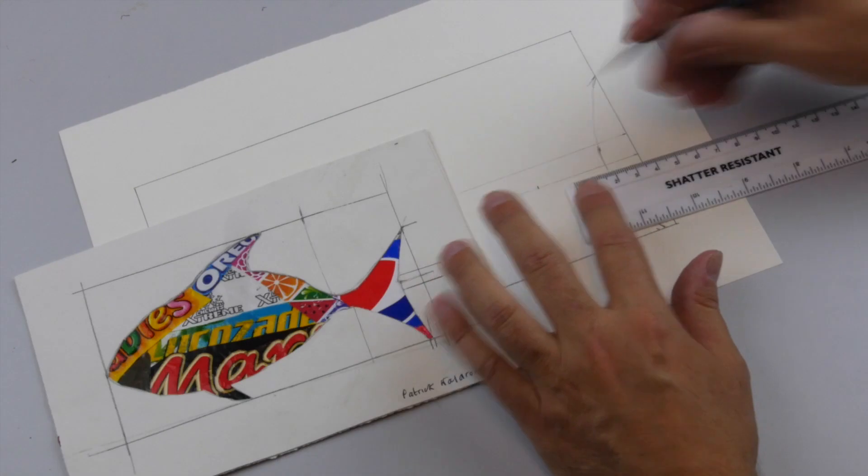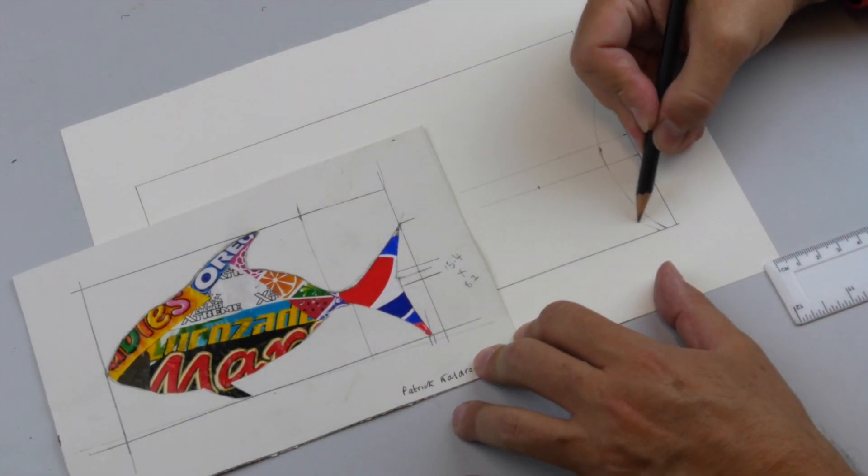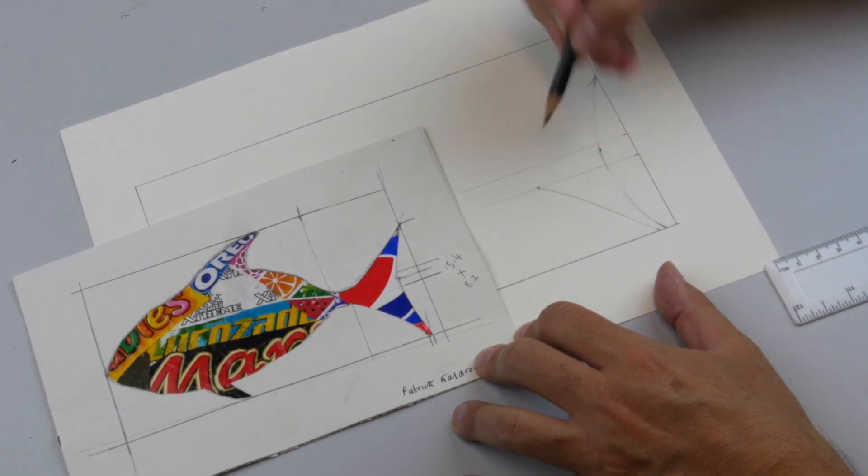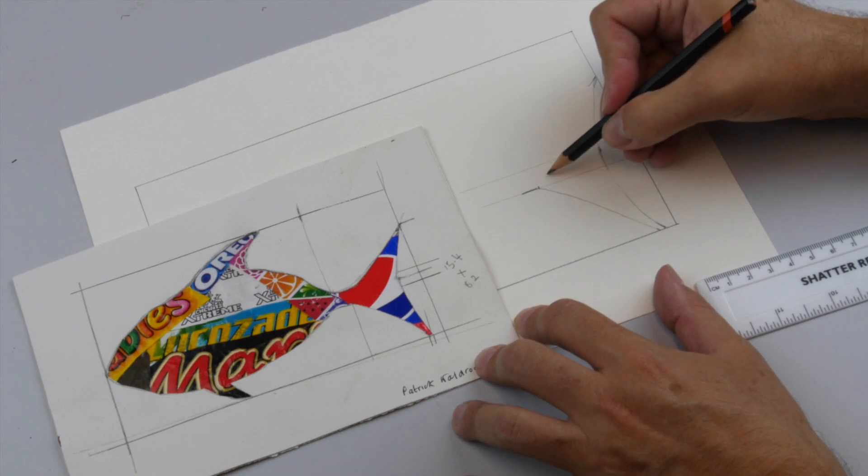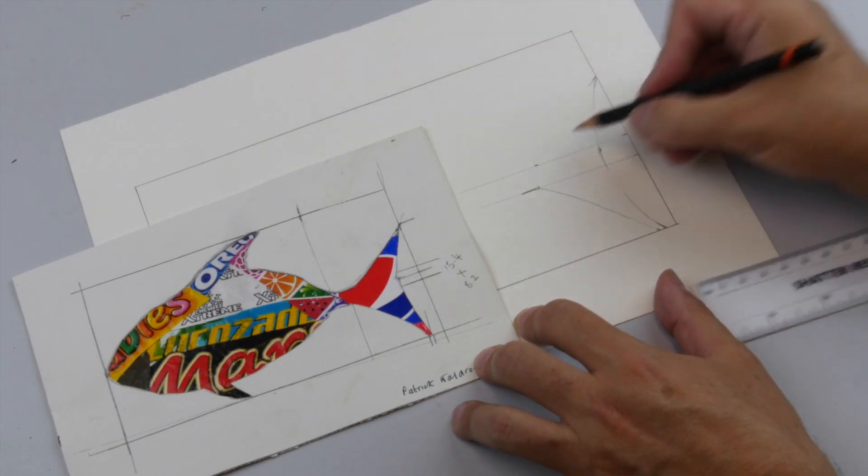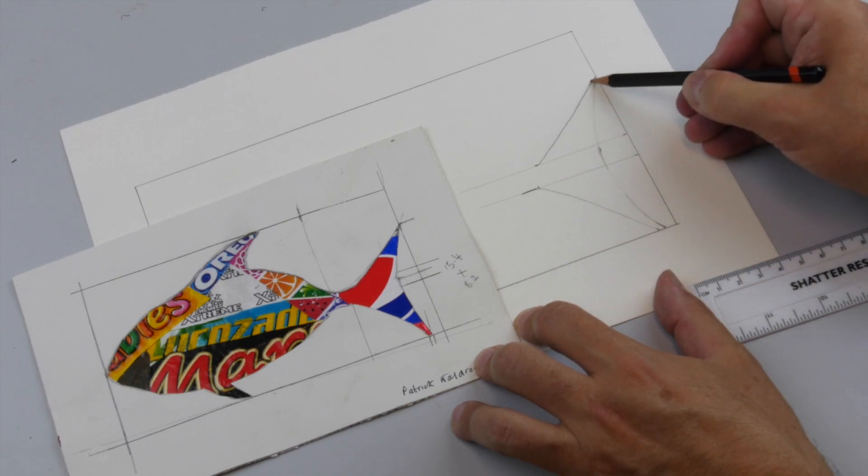So I know I can do this by eye. I know that goes to there and then it starts to go in, and then obviously this goes a little bit further back. I could measure it if I want, but then that's quite straight so I can draw that freehand.